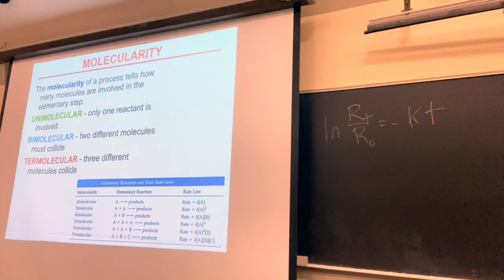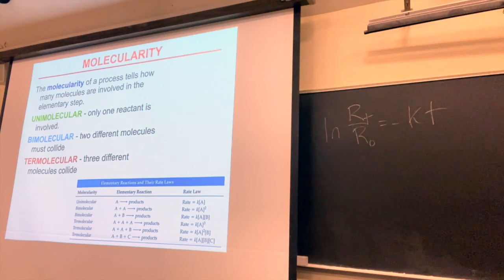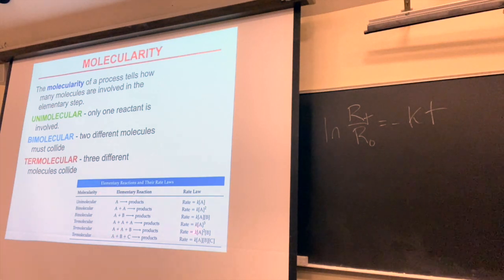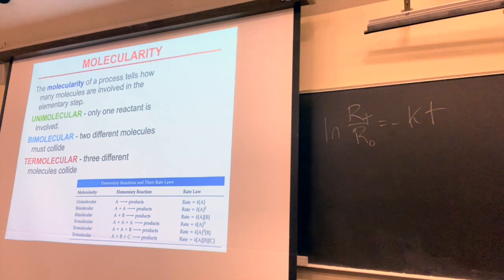A student asks if you can also have rate expressions like k times A times B squared for termolecular reactions. Yes, absolutely — if you have two B's and one A, the rate would be k times A times B squared. We'll do more of this on Wednesday. Have a good day.